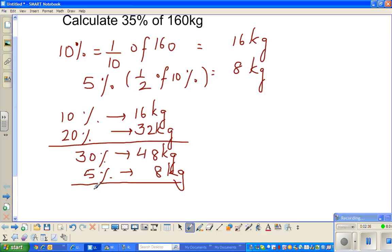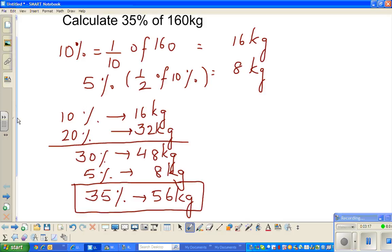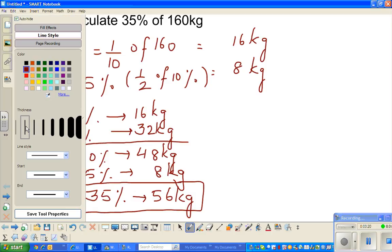So what is 5%? We already wrote 5% as 8 kg. So the answer is 56 kg in one way. You should do this in a different way. It's always fun. What I do is, when I'm driving and see a number plate, I look at the number and try to do some percentage examples.